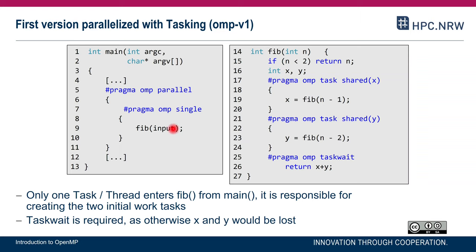Single is a work-sharing construct with an implied barrier at the end. So one thread calls Fibonacci while the others wait at the implied barrier — they are available to execute the tasks for which execution has been deferred. We have n−1 threads waiting and one thread executing. It will encounter a task construct, another task construct, and then a taskwait.